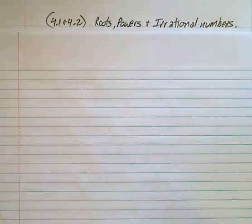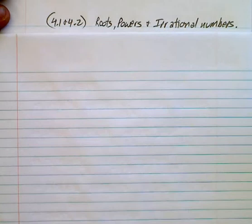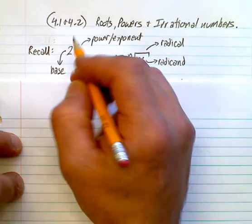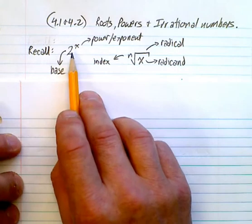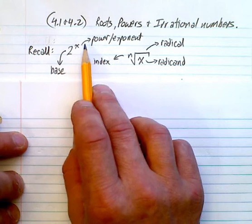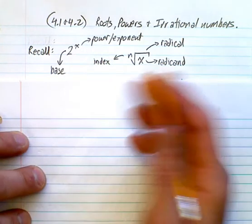This section deals with a few things that you should know, and I'll just review a bunch of things here. First of all, I'd like you to think about an exponential situation. This is your base, and that's your exponent or power. 2 to the power x, 5 to the power 2, whatever it is.